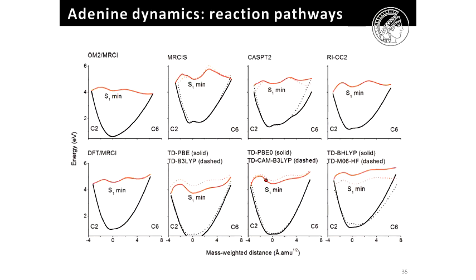The problem here is that to go either to C2 or C6 depends upon overcoming two barriers—either a barrier that goes to the conical intersection of C6 or a barrier that goes to the conical intersection of C2. If you compute the reaction pathway from the excited state minimum to either conical intersection, you see that every method gives a different relation between the barriers.